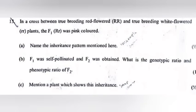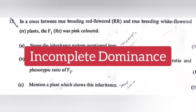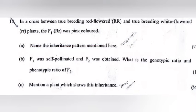Question 13: In a cross between true-bred red flower (RR) and true-bred white flower (rr) plants, the F1 (Rr) was pink-colored. Name the inheritance pattern mentioned here. Answer: Incomplete dominance.